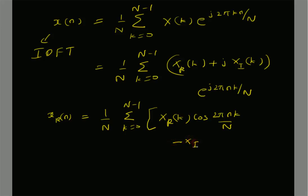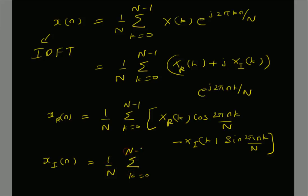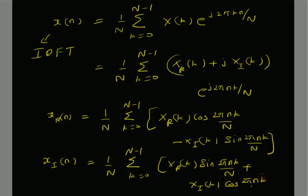Similarly, we can write the definition of x i of n in terms of x r and x i of k as follows: 1 by N summation k equal to 0 to N minus 1 of x r of k times sin of 2 pi n k by capital N, plus x i of k times cos of 2 pi n k by capital N. Let us call these equations 6 and 7.